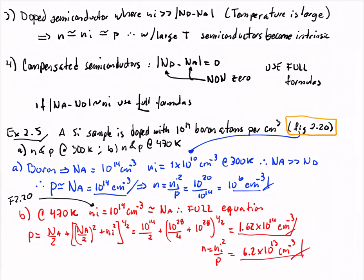We have a semiconductor that is doped where the intrinsic concentration is much larger than ND minus NA, but also the temperature is large. In this case, n will be equal to about NA and will be more or less equal to p. What this means is that with large temperatures, semiconductors become intrinsic.